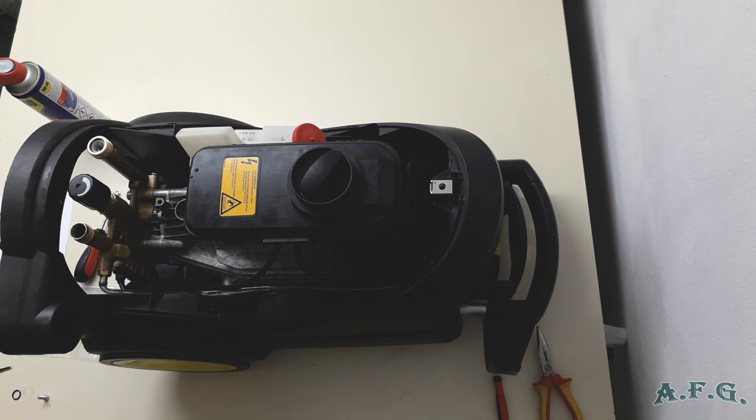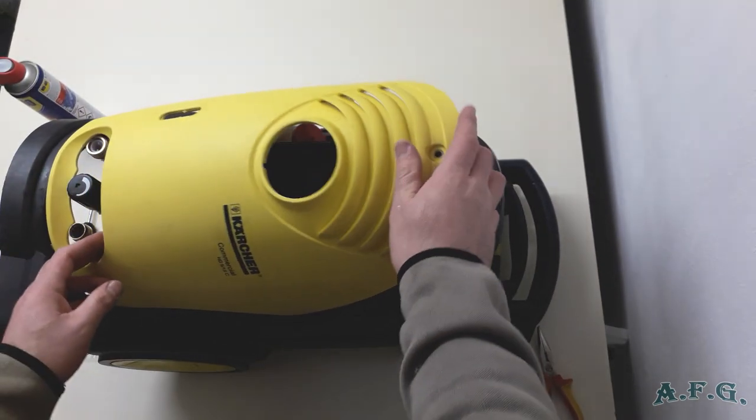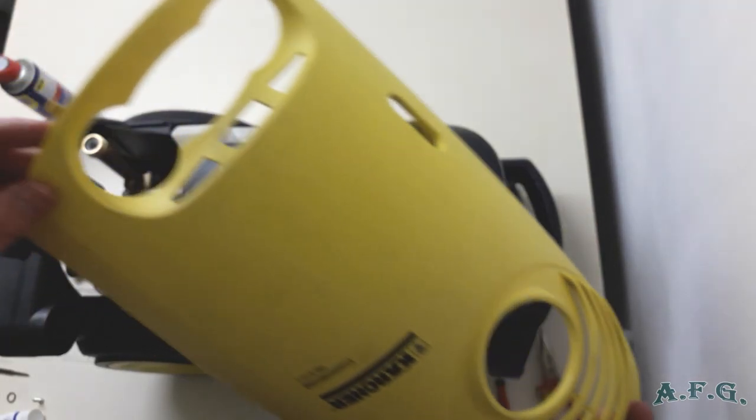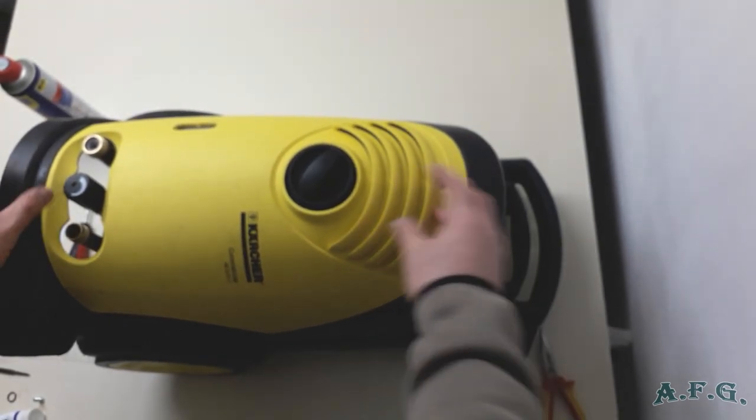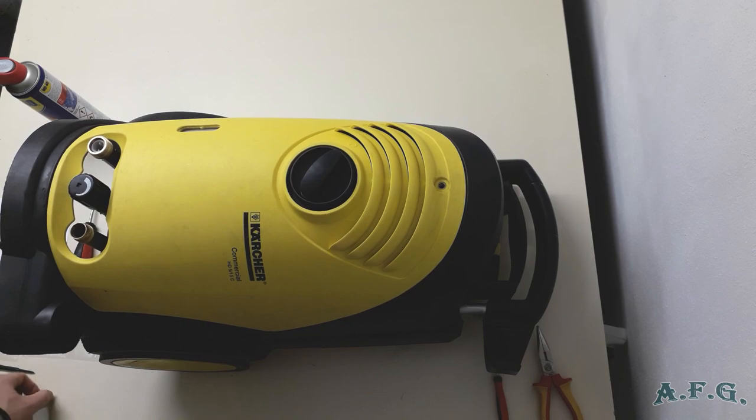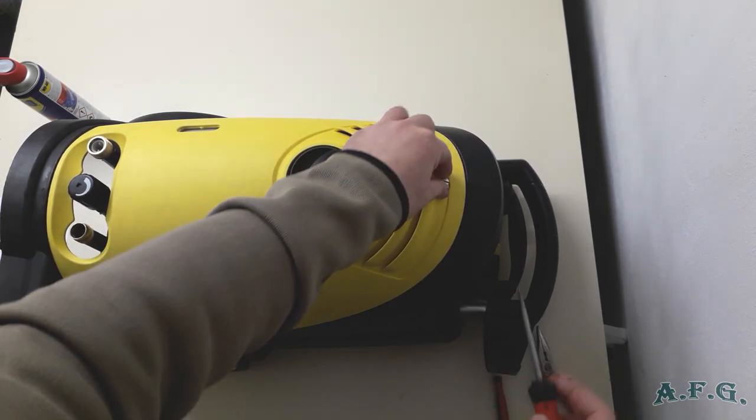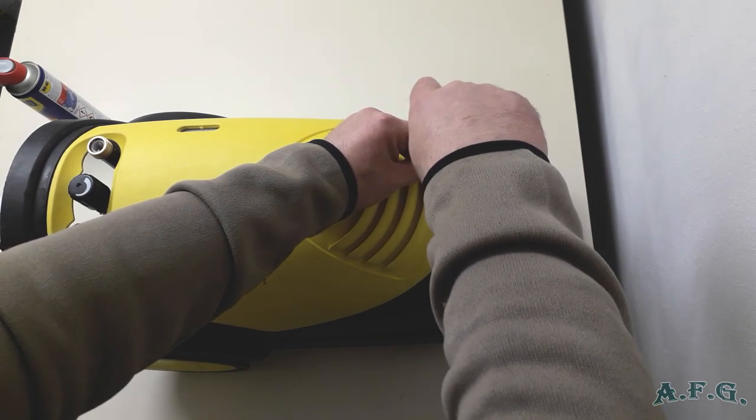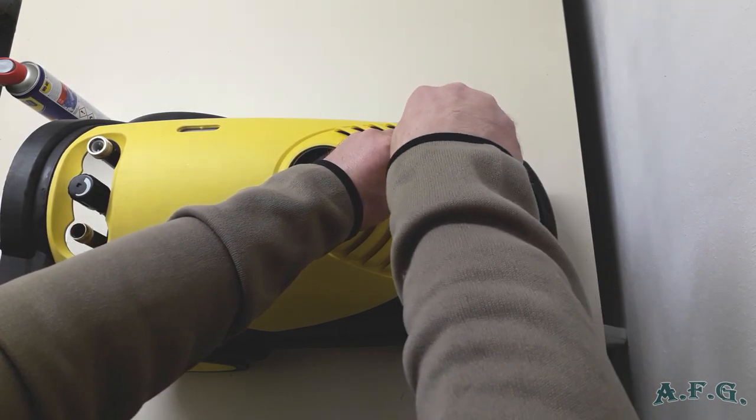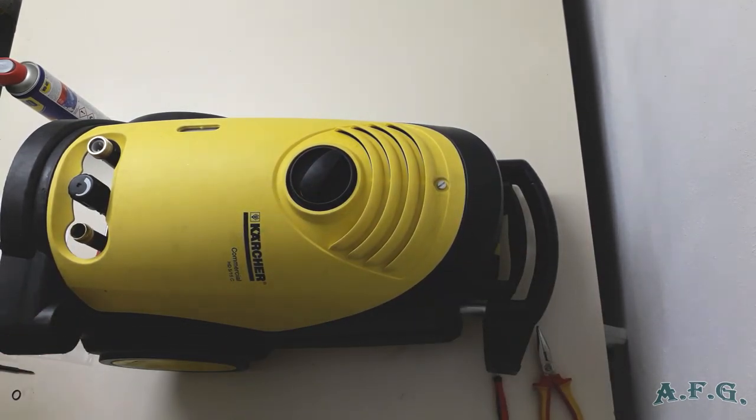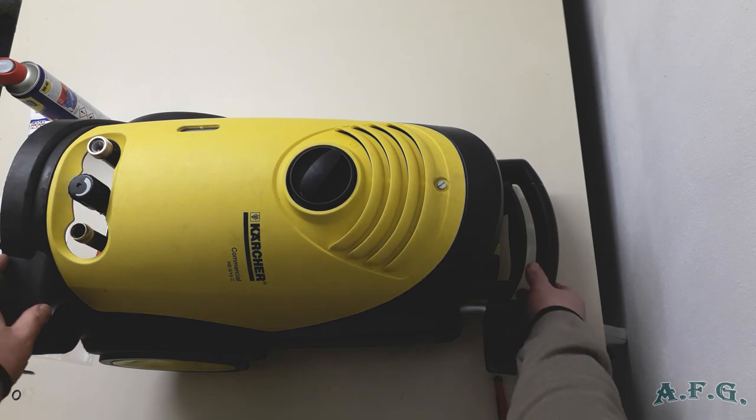We can place back the front cover where it was before. You see there are such plastic holders or whatever it's called. They have to fit into the body of the power washer. And then just tighten the screw. And now we have it. That's everything.